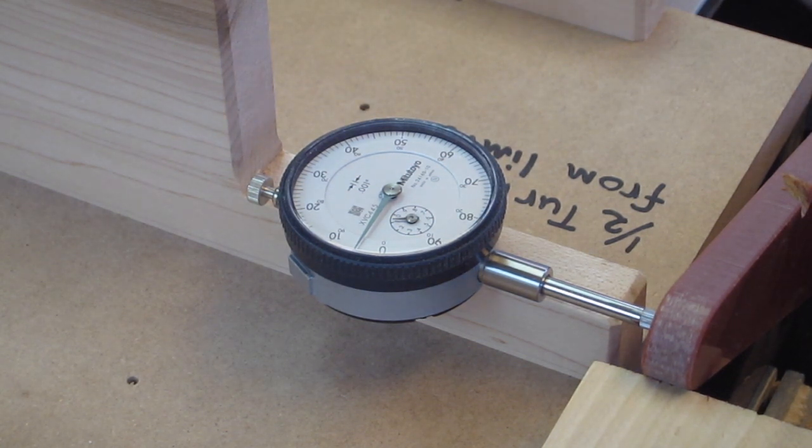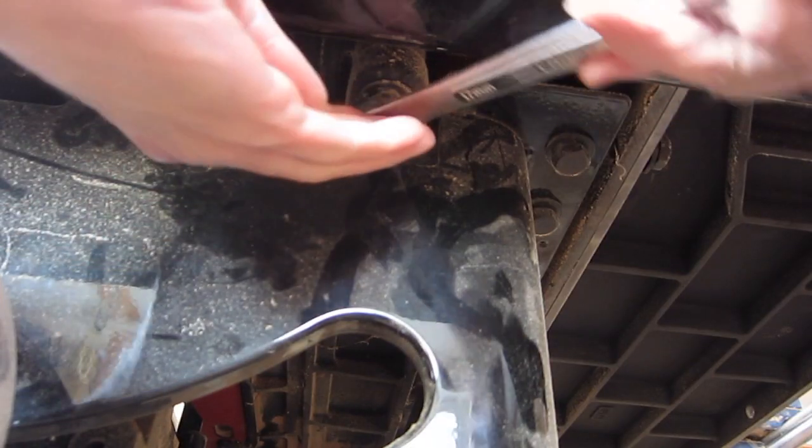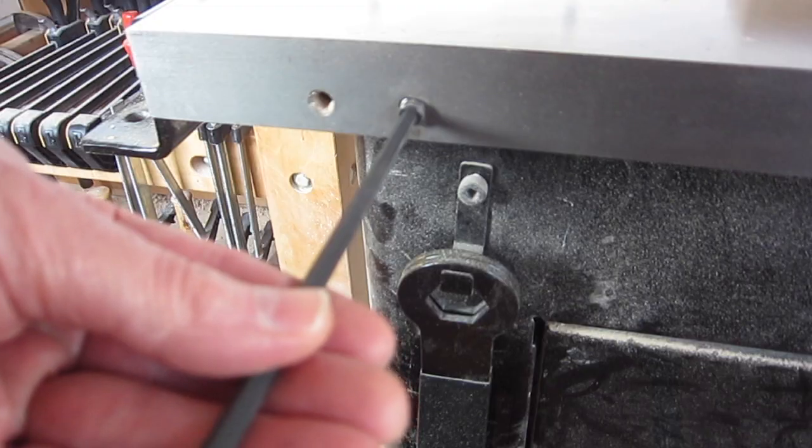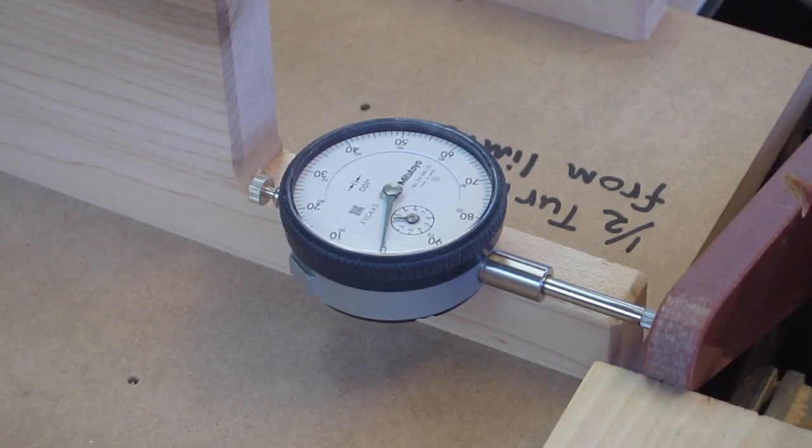So I'll just try bringing that in line. On this machine, you undo four bolts underneath and turn these set screws. And there I can see I'm bringing it in. And I'm going to go a little beyond because the pivot point is up at the front end of the saw.